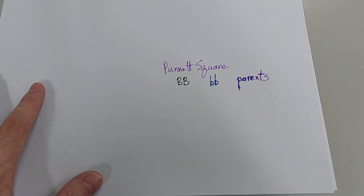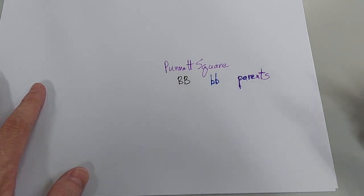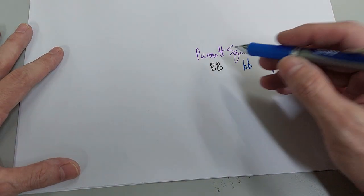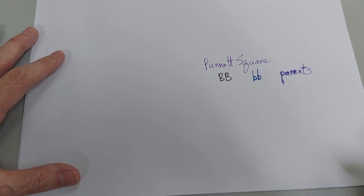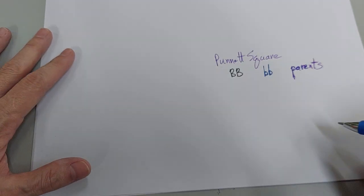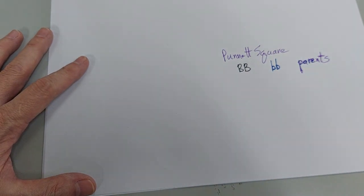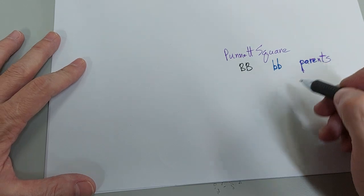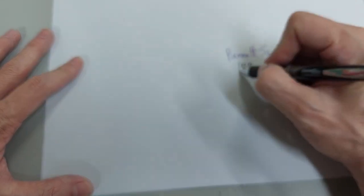So real briefly here, this is way more complicated, but I want to just set it up here so that maybe some people will have a better understanding of this. So what I want to do is make what's called a Punnett square. Punnett was another guy's name. What he did was basically say that when you take two parents, I'm just going to call them Big B and Little B.